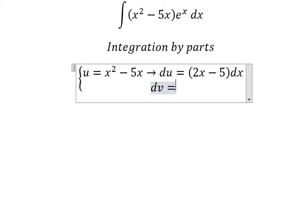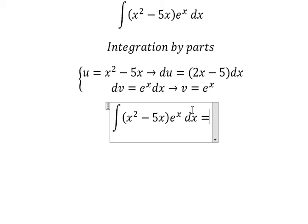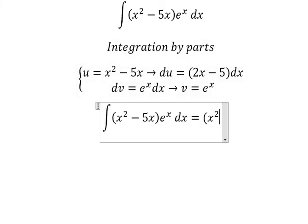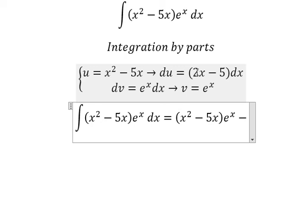dv we have e to the power of x dx. The integration of this one, we have v equals to e to the power of x. So we have u multiplied by v minus the integral of v du.